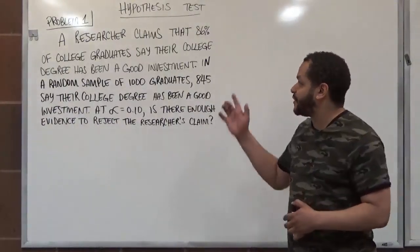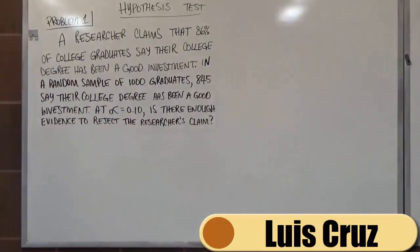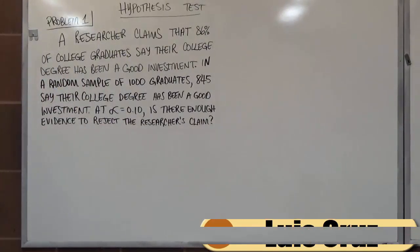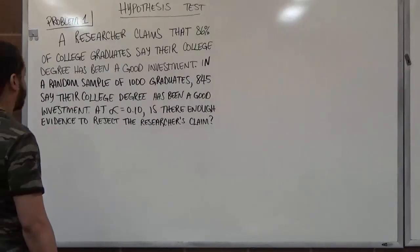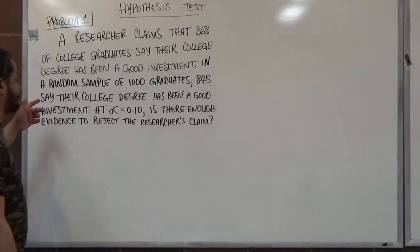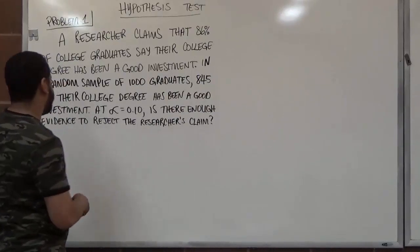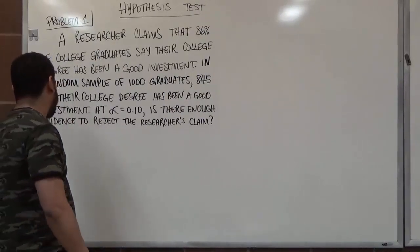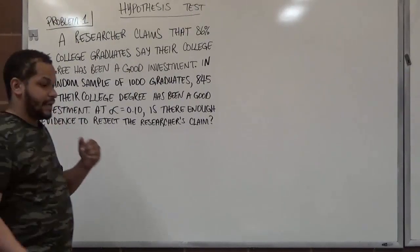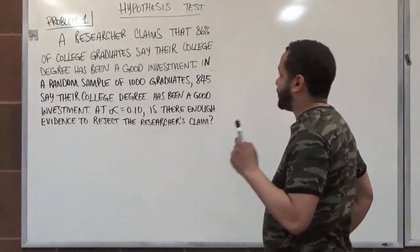Welcome to HopeYourMath.com. In today's video, we're going to be talking about problem one for the review for the statistics exam. Now, here we have hypothesis testing. A researcher claims that 86% of college graduates say their college degree has been a good investment. In a random sample of 1,000 graduates, 845 say their college degree has been a good investment. At a significance level of 10%, is there enough evidence to reject the researcher's claim? We have a lot of information, so let's start by highlighting what's important in this problem.